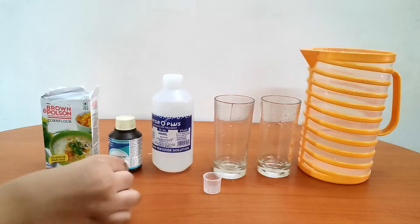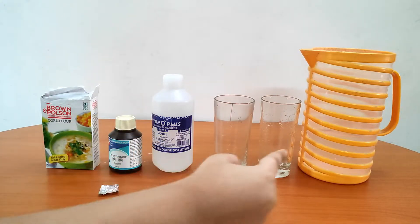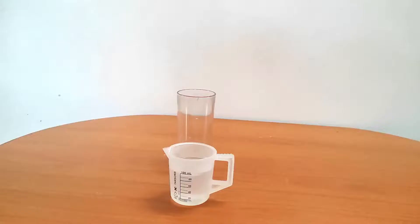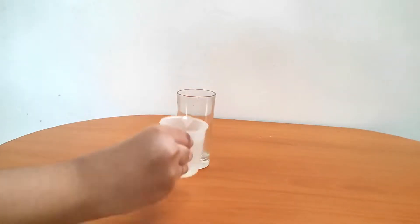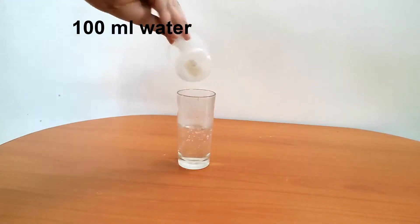Six percent hydrogen peroxide and warm drinking water. First, we will measure and pour 100 ml of warm water in a glass. Now we will crush our vitamin C tablet and put it in the warm water and dissolve it.